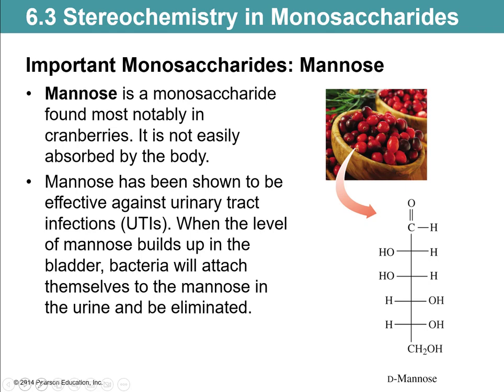So how would you define mannose as a carbohydrate? Looking at the number of carbons and where the double bond oxygen is — it's an aldohexose. It's an aldehyde because the double bond oxygen is on the end, and there are six carbons. Remember, if you don't see a C but you see a little cross in a skeletal structure, each of those is actually a carbon. So mannose is an aldohexose.